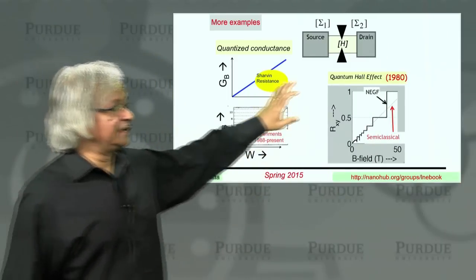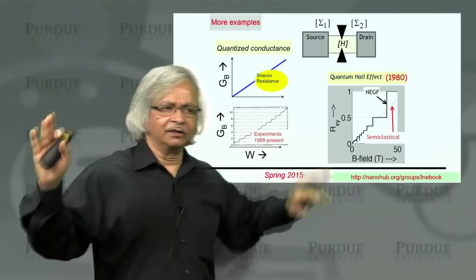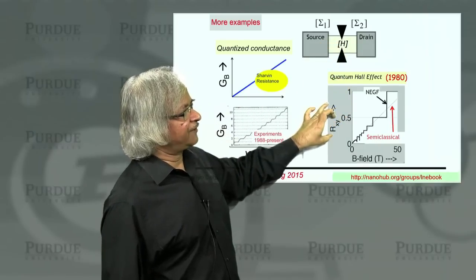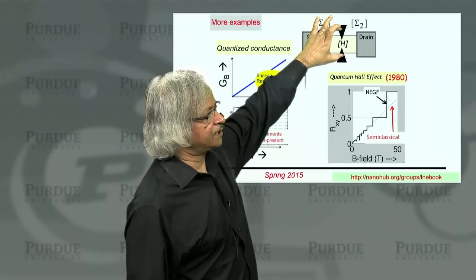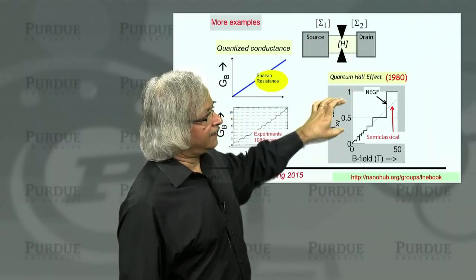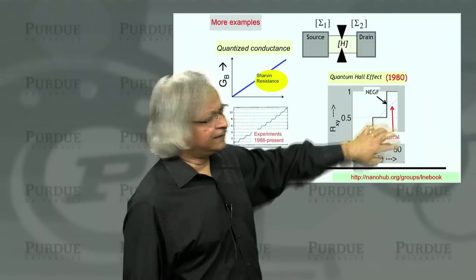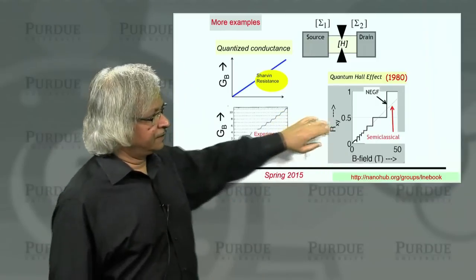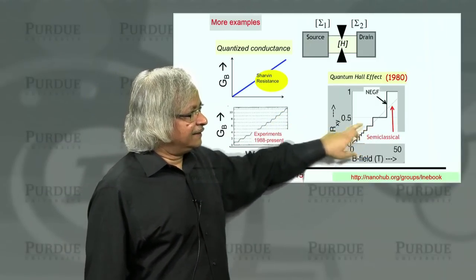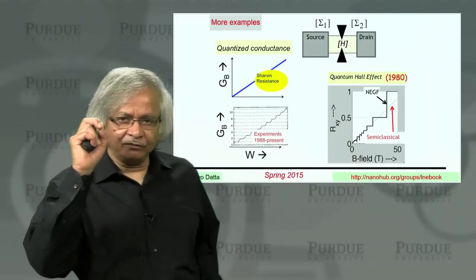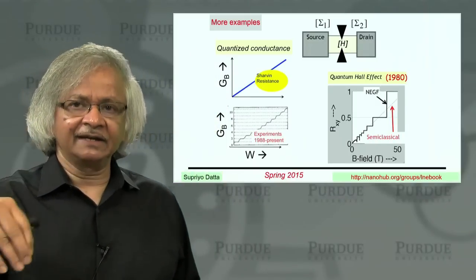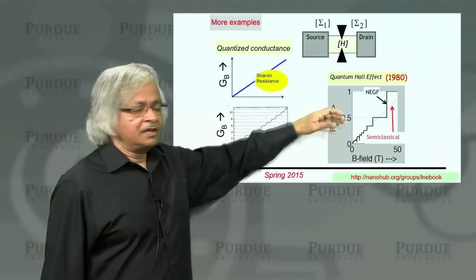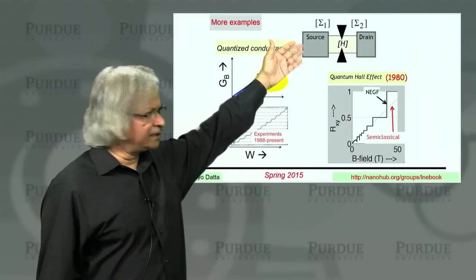Another problem we'll talk about, something we didn't discuss at all in Part A, is the Hall effect. That's a very well-known phenomenon from the 1880s: when you apply a magnetic field, there is what's called the transverse resistance — a voltage in one direction proportional to the current flow in the perpendicular direction. That transverse resistance is supposed to increase linearly with magnetic field. But what was discovered in 1980 was a very striking result: at high magnetic fields, this transverse resistance is actually quantized and has these very accurate values, out to six or seven decimal places. It is so accurate that NIST, the National Institute of Science and Technology, uses this as a standard of resistance. This is another example we'll talk about using the NEGF method.